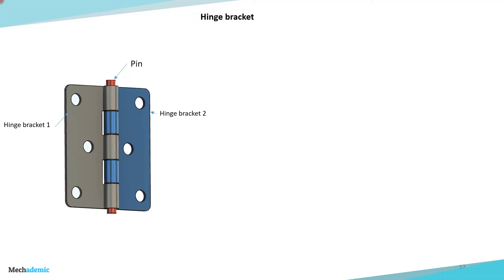There are three main parts: hinge bracket 1, hinge bracket 2, and these two are assembled with a pin at the center. Both are sheet metal parts with a bent portion that forms the hole through which the pin will be inserted. We will be deriving the tolerancing scheme for hinge bracket 1.